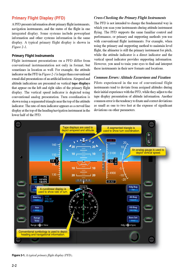Primary flight instruments. Flight instrument presentations on a PFD differ from conventional instrumentation not only in format, but sometimes in location as well. For example, the attitude indicator on the PFD in Figure 2-1 is larger than conventional round dial presentations of an artificial horizon. Airspeed and altitude indications are presented on vertical tape displays that appear on the left and right sides of the primary flight display.